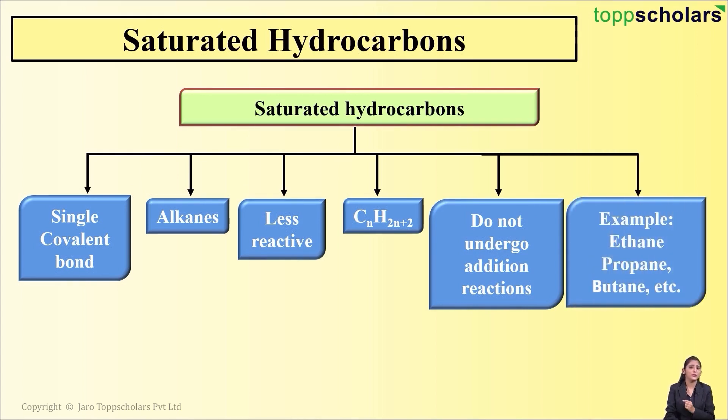Let's see some examples of alkanes. Ethane, propane, and butane are examples of alkanes. These compounds contain carbon-carbon single bonds; they are saturated hydrocarbons.